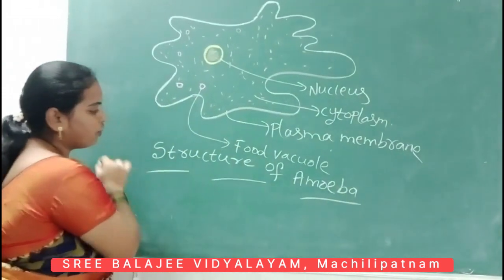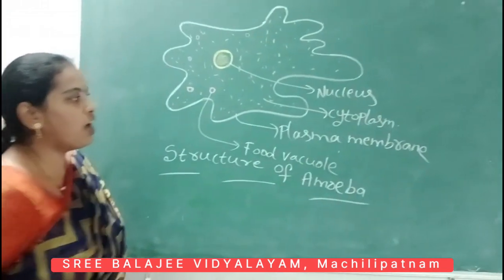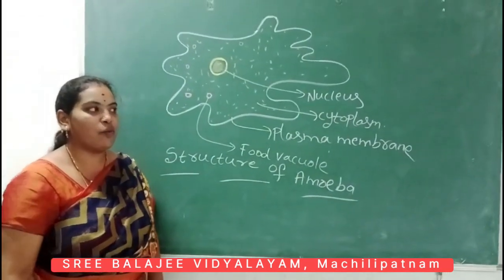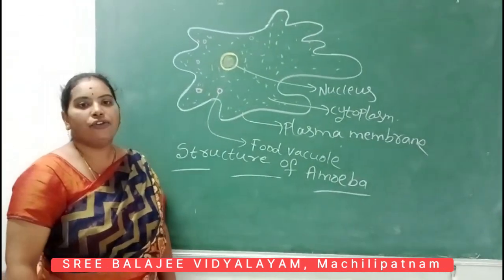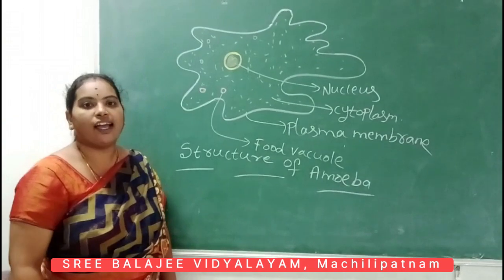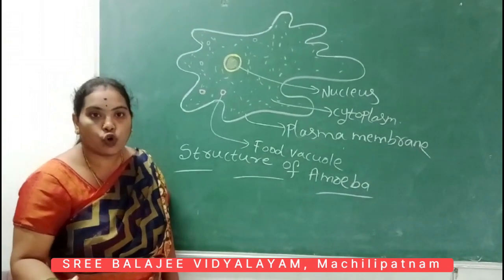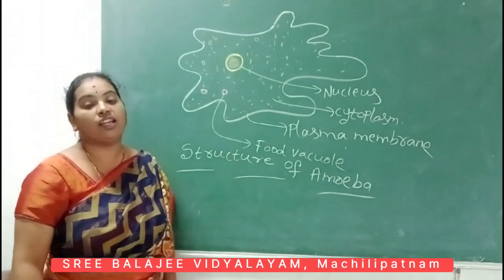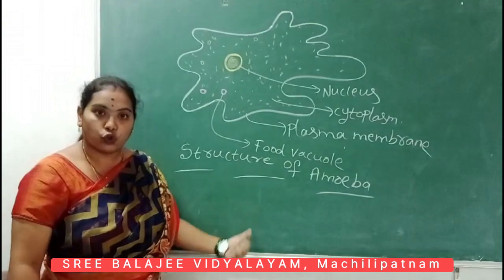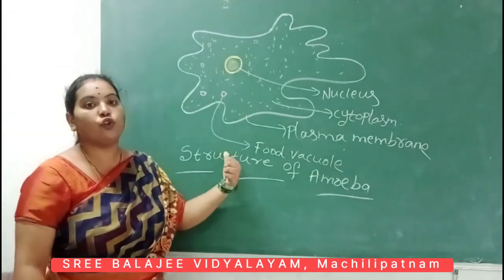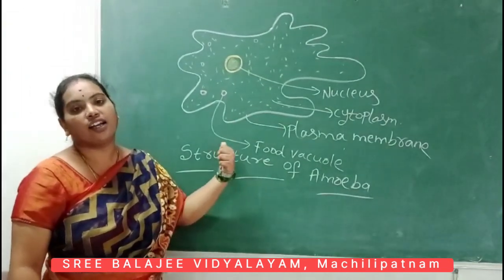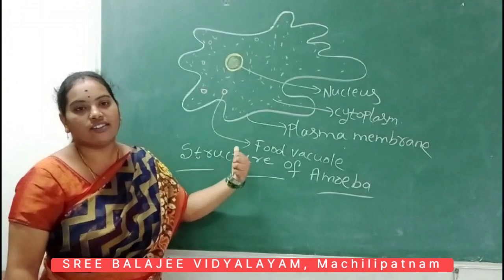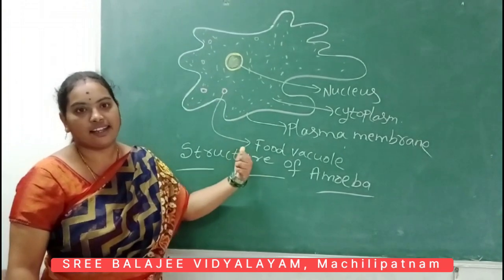So this is the structure of amoeba. This may be asked as a question at the time of examination — you draw the diagram of protozoans — because amoeba is one example of a protozoan. This is a unicellular organism. It is mainly present in ponds, rivers, lakes, and so on.